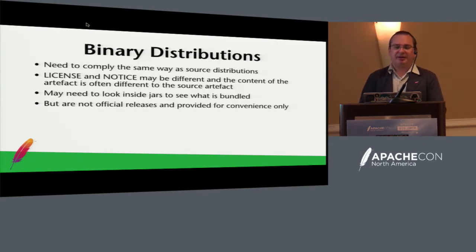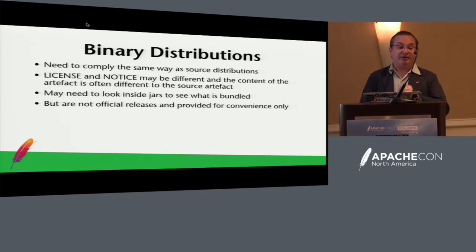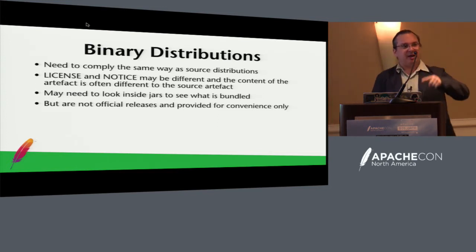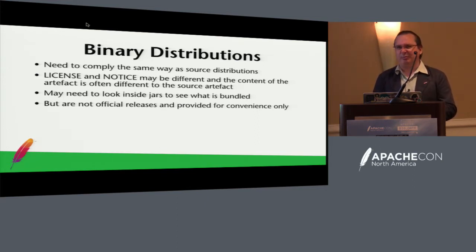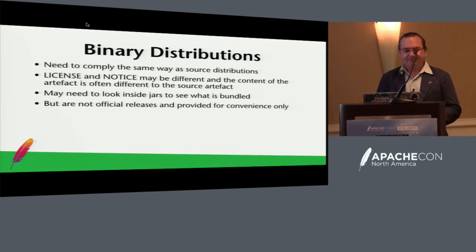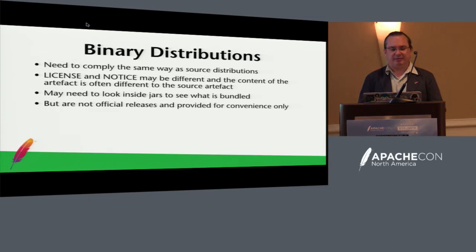Binary releases have to comply in the same way as source distributions, but the contents could be different, so you may need a different license and notice file. The best way is to look inside all the jars in your binary release — you can do that with a text editor since they're generally just compressed files — and see what's bundled and what licenses they're under. If you make mistakes with the binary distribution, people are probably not going to vote minus one unless it's really major, because binary releases are provided for convenience only. It's the source release that is the more important one.